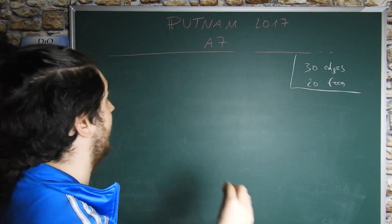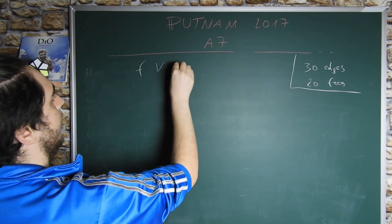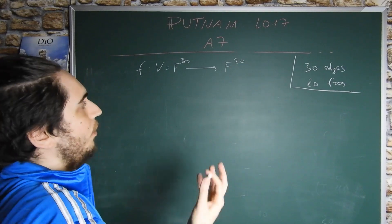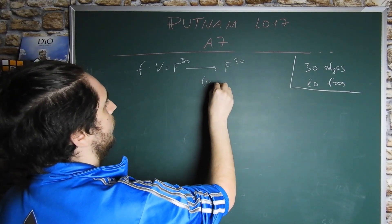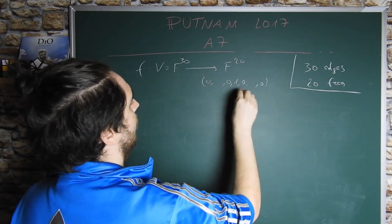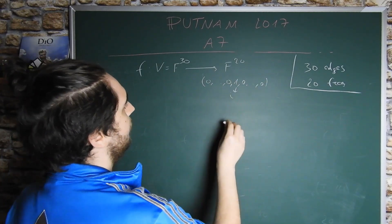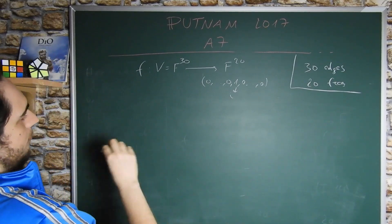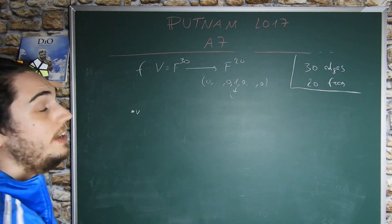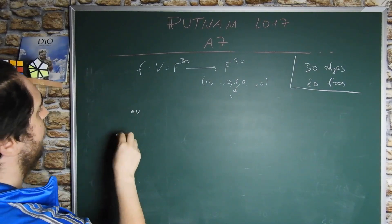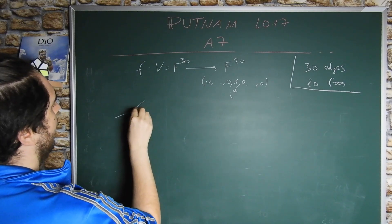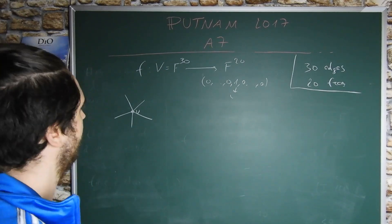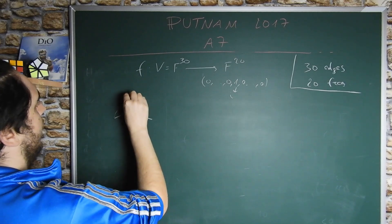In order to prove that our F from V to F to the 20 is surjective, we can show that all the vectors of the form 0, 0, 1, 0, 0, where 1 is at the place i for every i from 1 to 20, are in the image of F. To do this, by symmetry, we fix a vertex of our icosahedron, and to every vertex we attach exactly five edges.